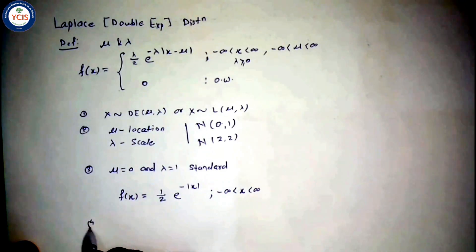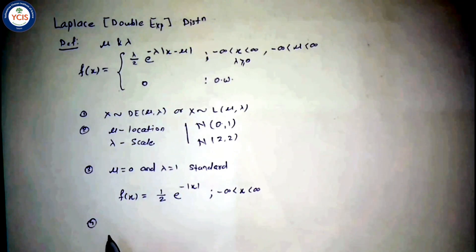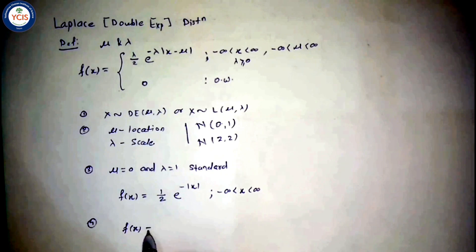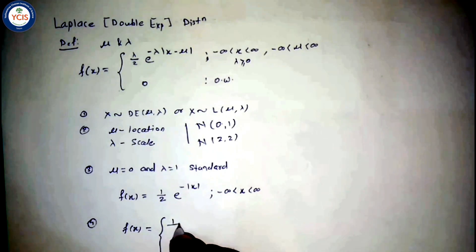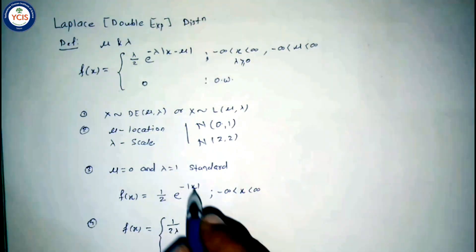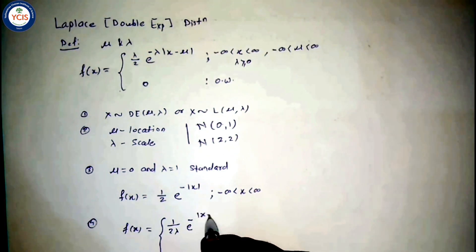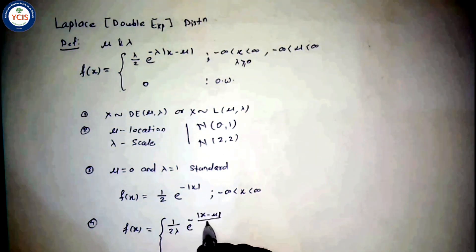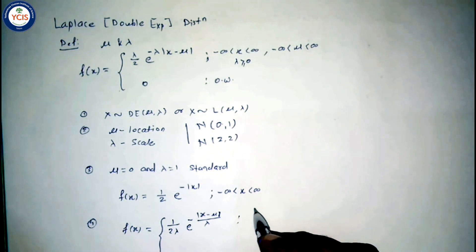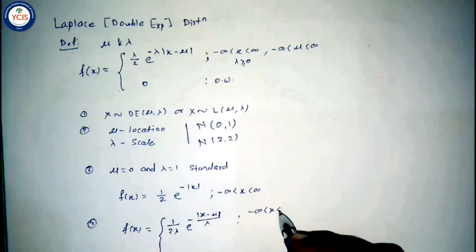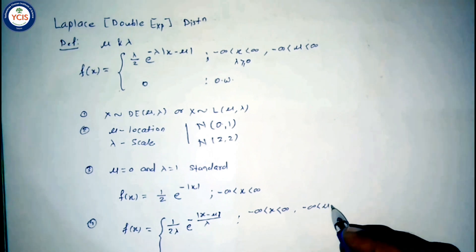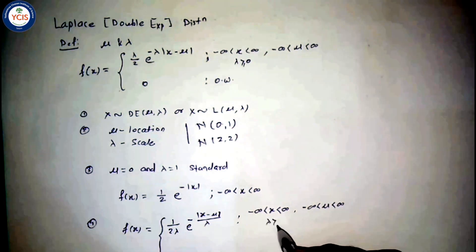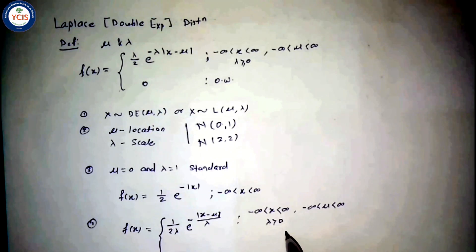Another form of the distribution: the PDF of the double exponential distribution with parameters mu and lambda can also be written as f(x) = (1 / 2*lambda) * e raised to minus modulus of (x minus mu) divided by lambda, with support set minus infinity to infinity, mu between minus infinity to infinity, and lambda must be greater than 0.